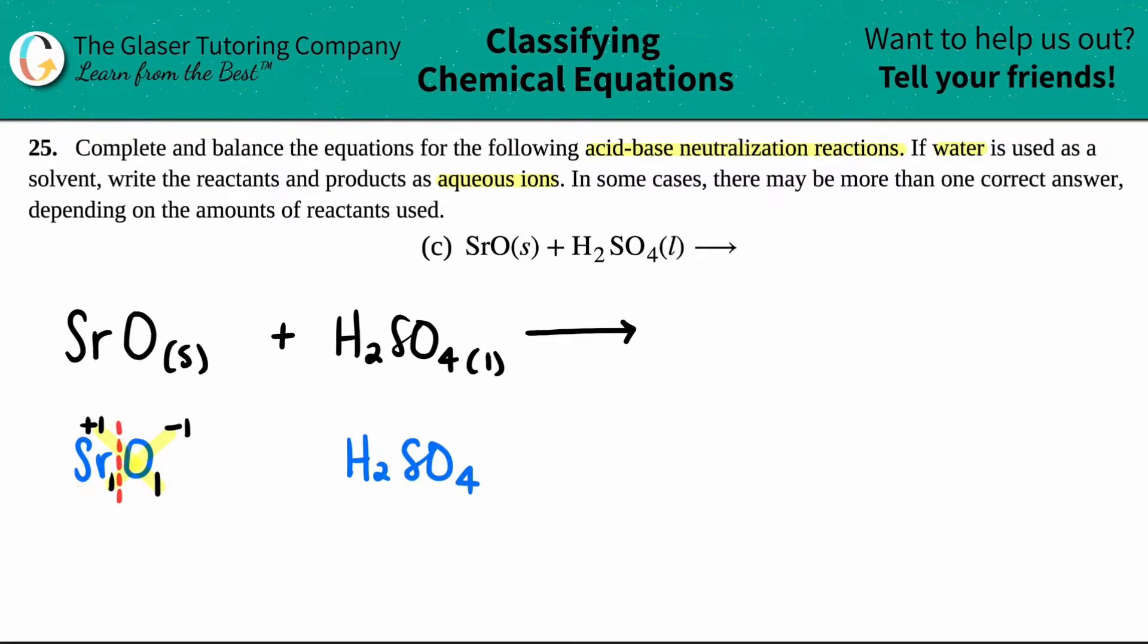You might be screaming at your computer saying, Christina, wait, strontium being a plus one? No way. And you're absolutely correct. Strontium is in group two and wants to be a plus two. This had to have been the simplified form.